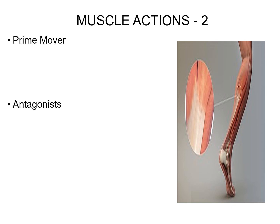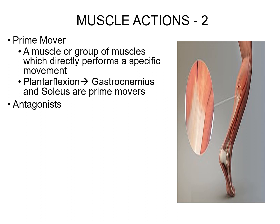A prime mover is a muscle doing the main job or the main movement. The example is plantar flexion — pointing your toes down or walking on your tippy toes. The main prime movers for that action are your calf muscles: the large ones called the gastrocnemius and the still-large ones called the soleus. When you abduct your arm, the prime mover is your deltoid. When you flex your elbow, the prime mover is an anterior arm muscle. When you kick a soccer ball, the prime movers are those big muscles in your femoral/quad region.